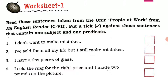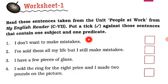Let's see — Worksheet One. Read these sentences taken from the unit 'People at Work' from My English Reader. Put a tick against those sentences that contain one subject and one predicate. So you need to use a tick in those sentences where you think there is one subject and one predicate.